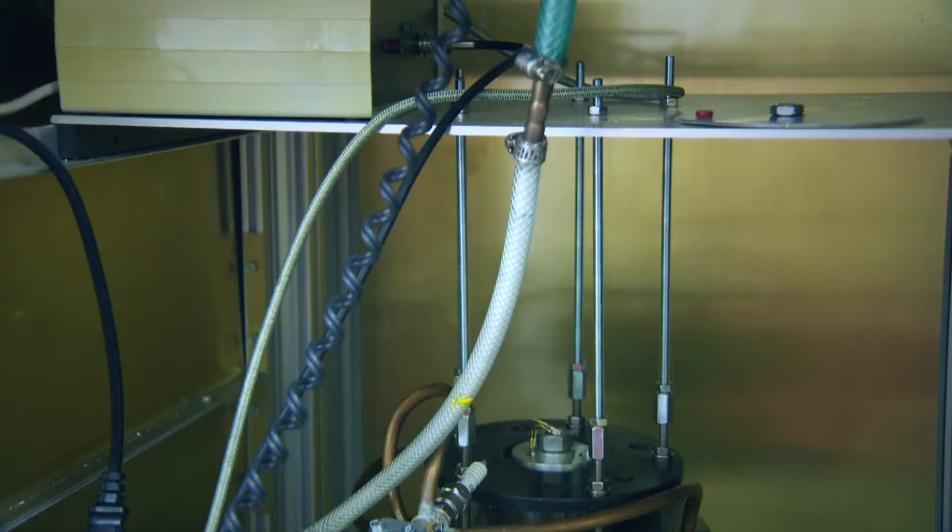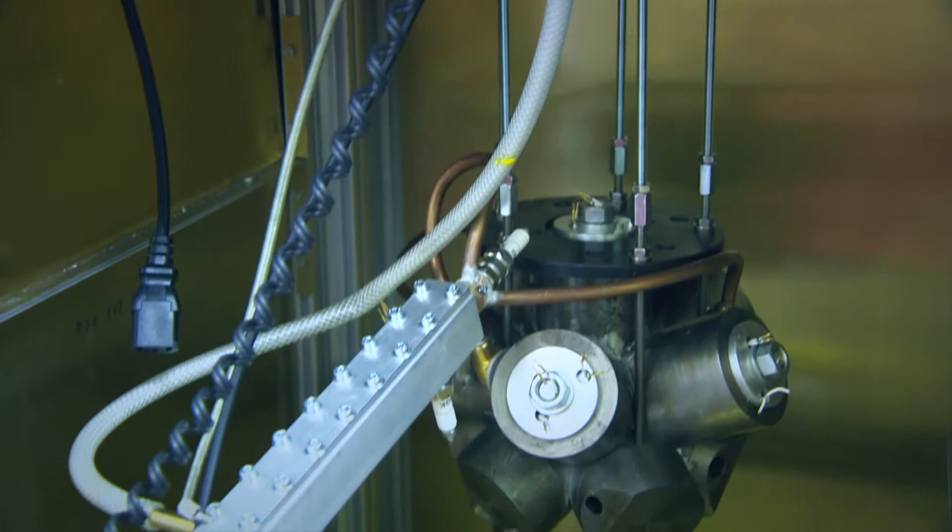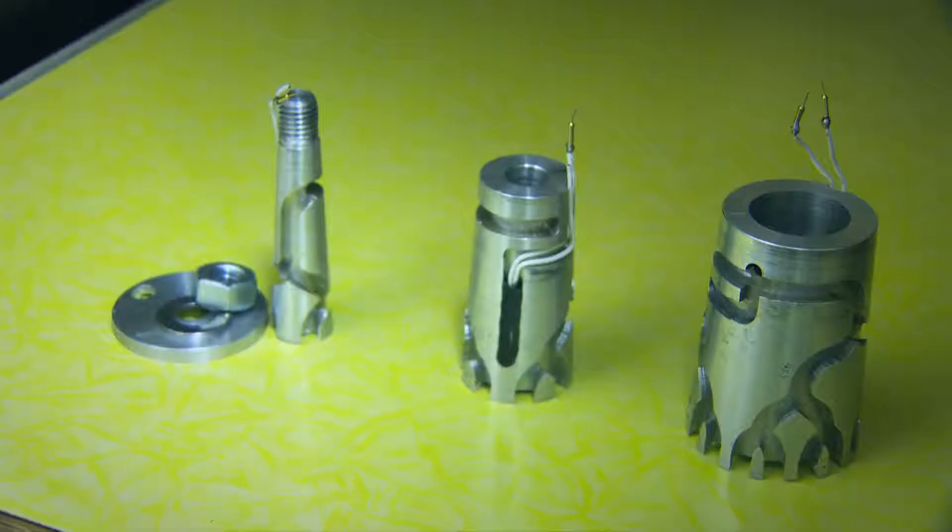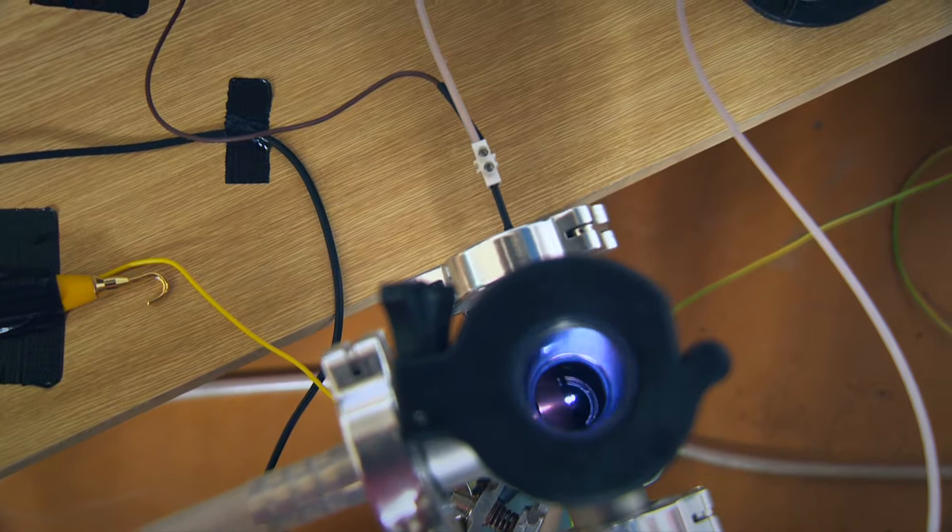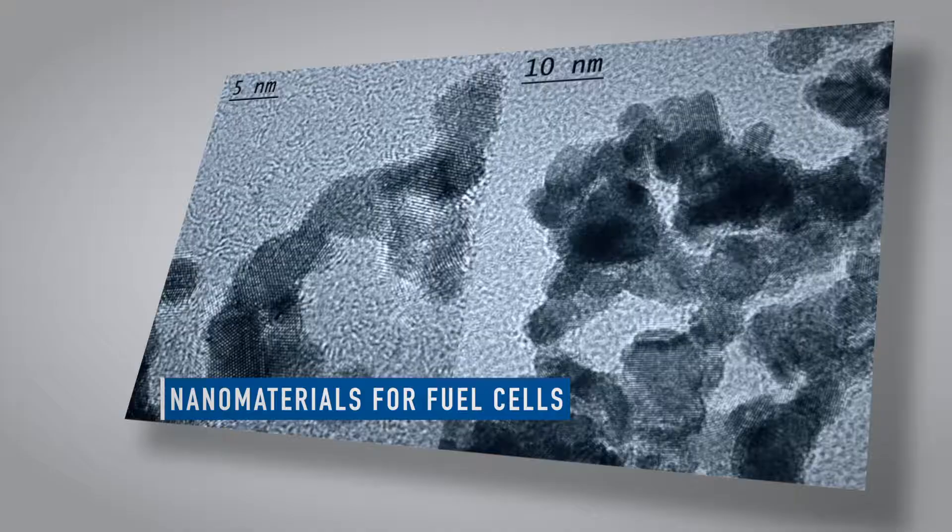Our researchers are developing new methods of direct transformation of the kinetic energy of plasma into electric energy without moving parts, and new methods of producing nanomaterials for more efficient and cheaper conversion of the chemical energy of hydrogen into electricity in fuel cells.